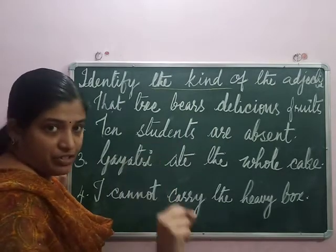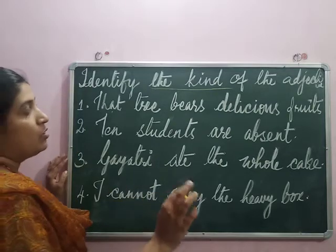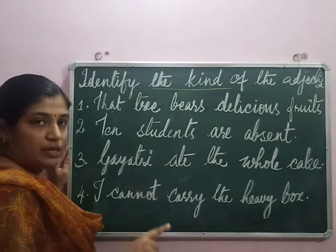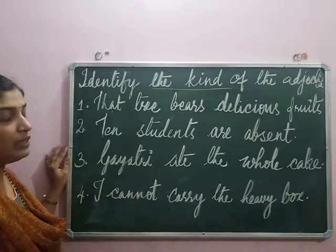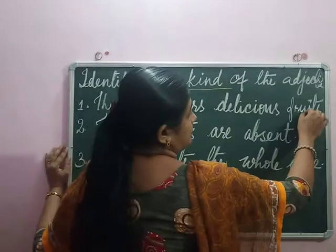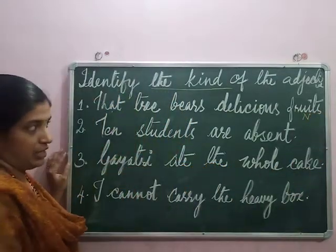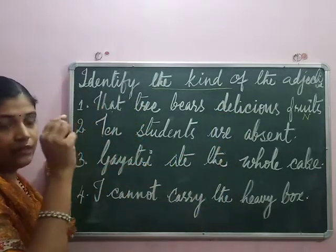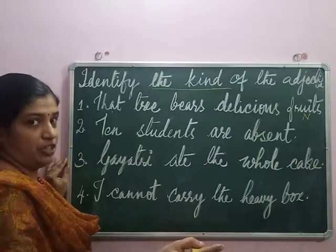That describing word is the adjective, then what kind of adjective is that? The first question: that tree bears delicious fruits. Here, the noun is fruits. The adjective is delicious because fruits is described by the word delicious.